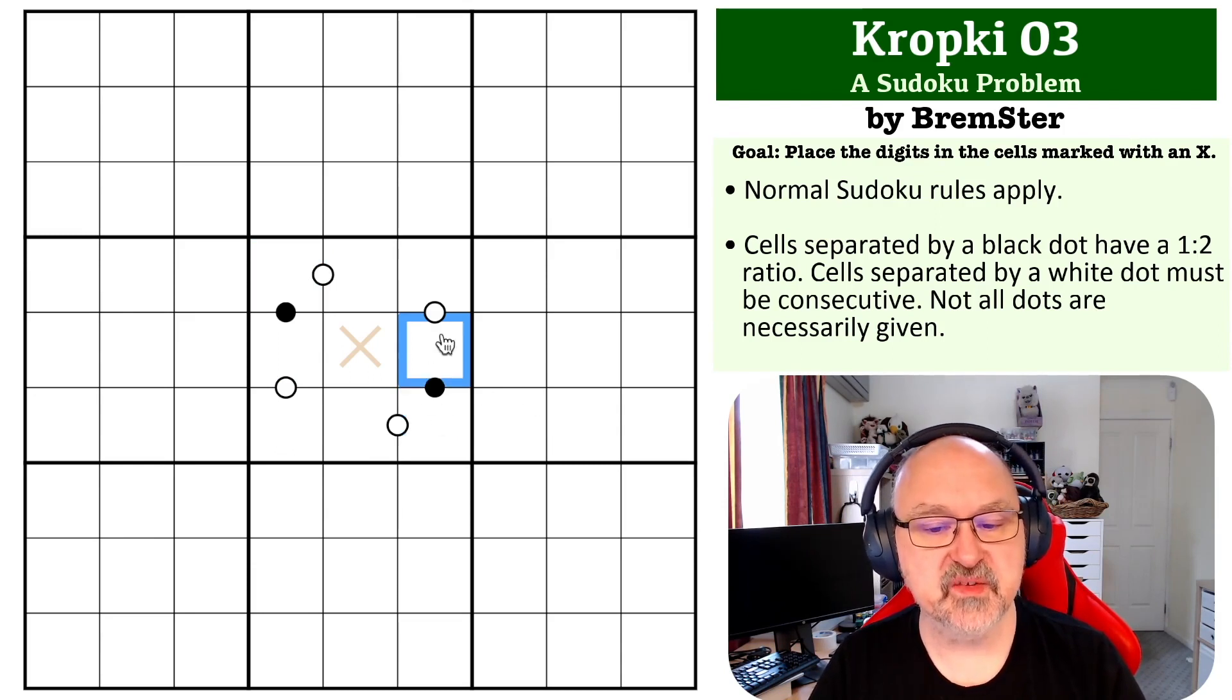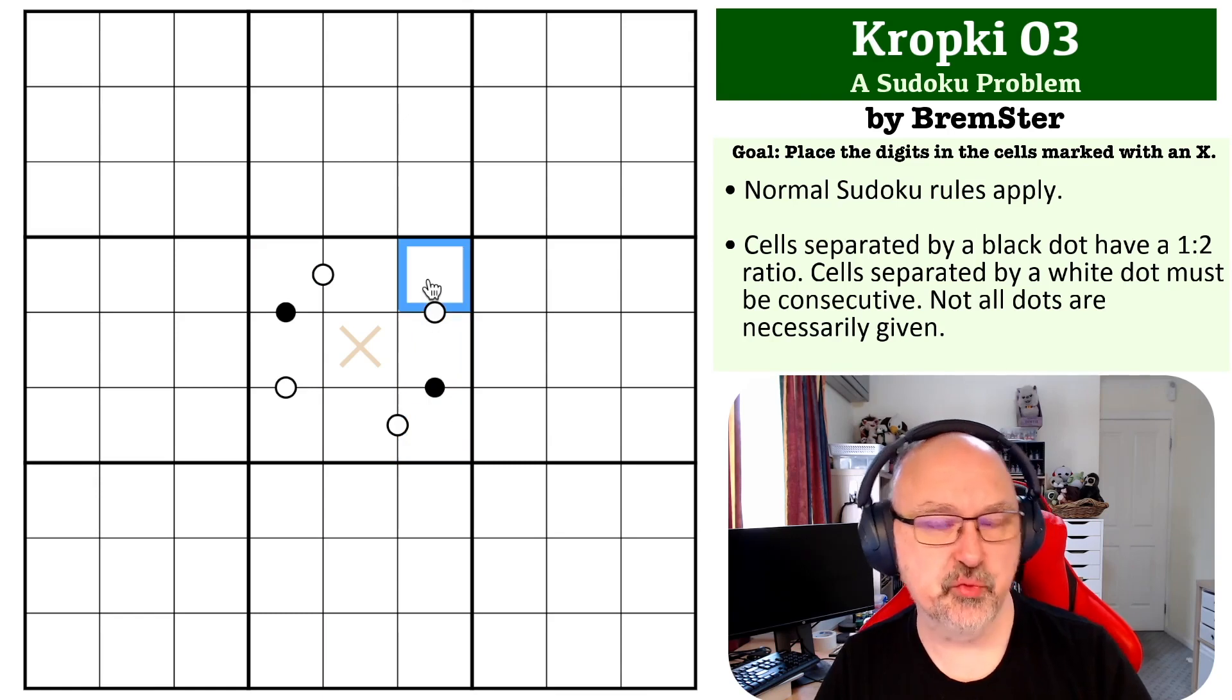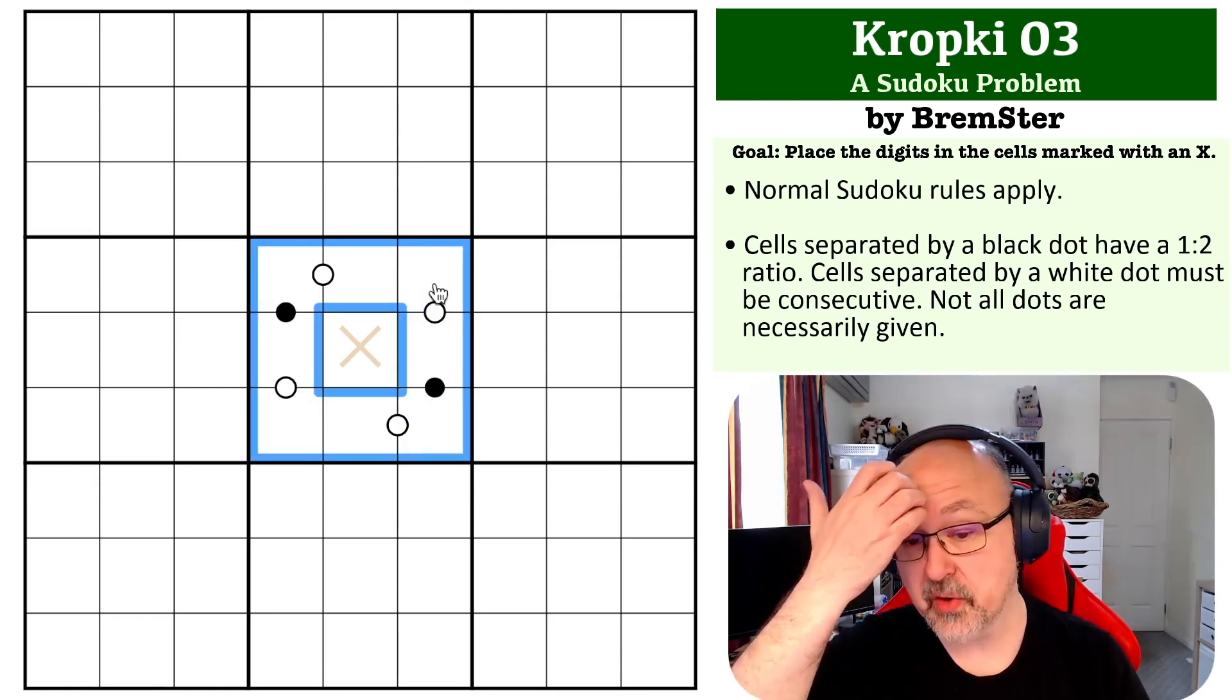Because if you put a one on one of these black dots, because there's also a consecutive dot next to it, it would need to have a two on both sides. And because it's all contained within a single box, that's not going to work.